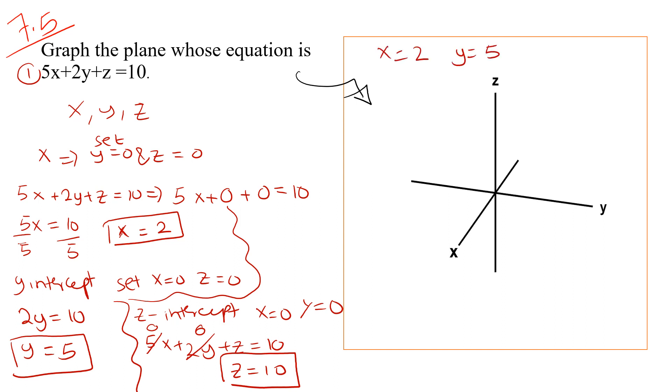So here we have our three intercepts: x equals to 2, y equals to 5, and z equals to 10. Now we just have to plot the plane.